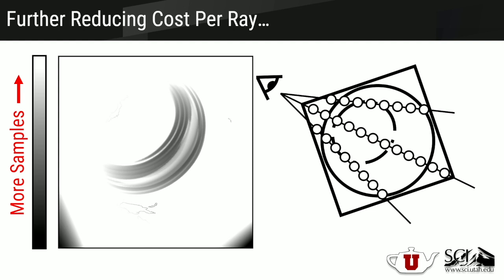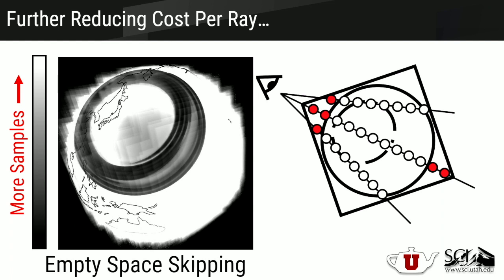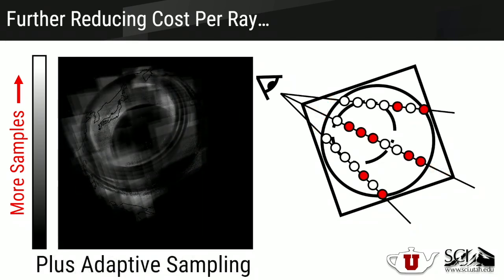We can also reduce the number of samples we take along each ray. Here I'm showing an image on the left — a heat map showing how much work we're doing per pixel — and we want to make that image as dark as possible. The first technique is empty space skipping, where we avoid taking samples in volumes that are completely transparent. The second is adaptive sampling, where we adapt the sampling rates to the underlying data variation — similar to importance sampling on a volume. Both techniques together can drastically improve the performance of a direct volume ray caster.